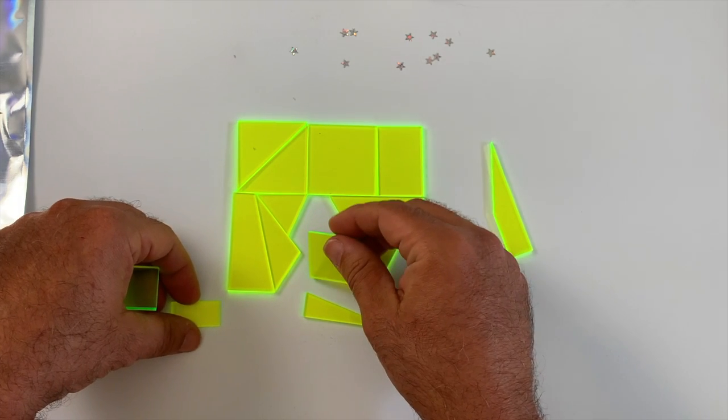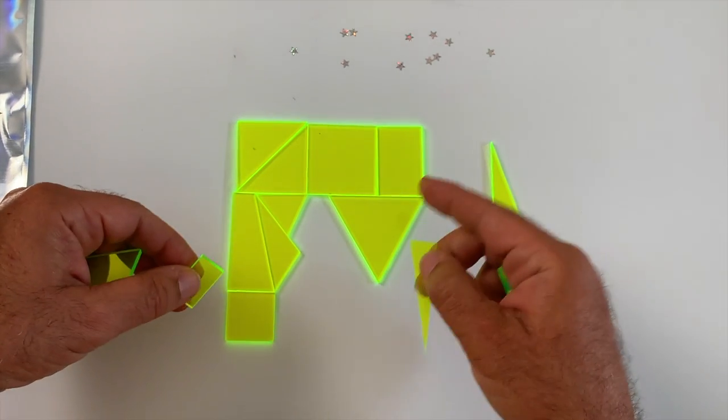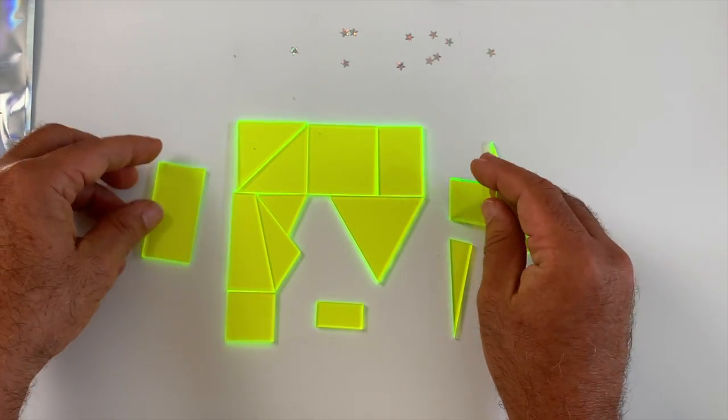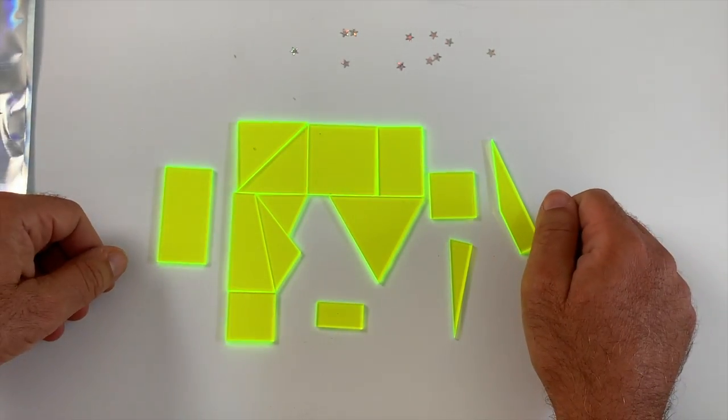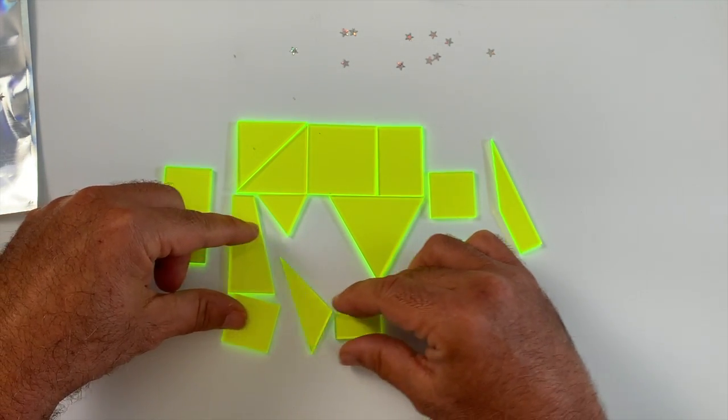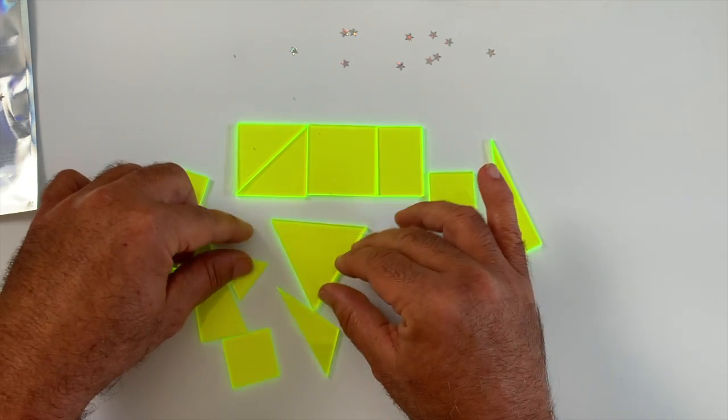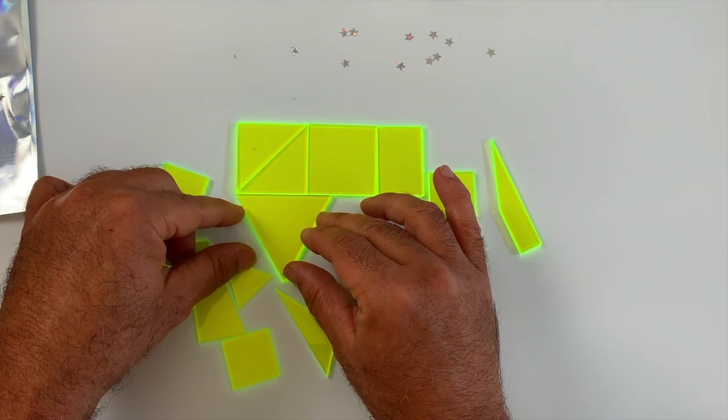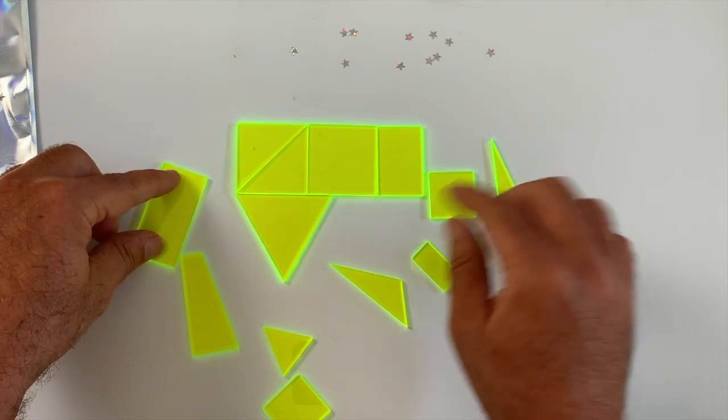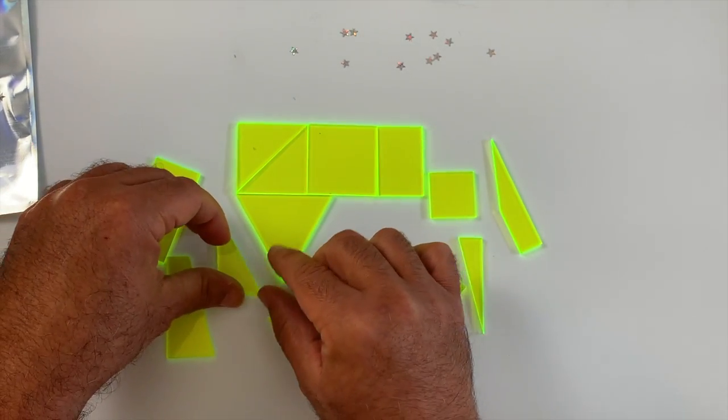This looks a bit weird. You can tell that that's not the solution, right? You've got to create a perfect square, so something is askew here, something is wrong. You're going to be playing with this for a bit because it's tricky.